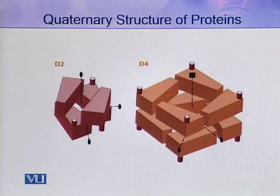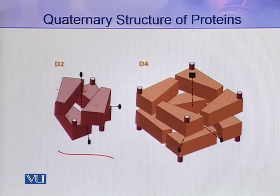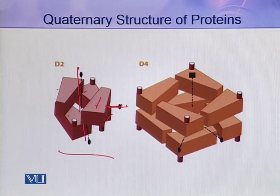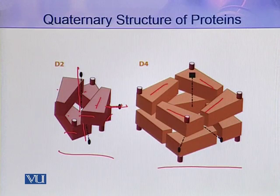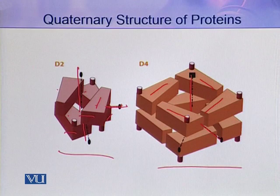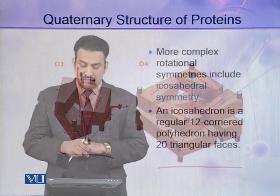As you can see in this diagram, four protomers are present but they have more than one rotational axis — one rotational axis is here and the other one is here, one for these two protomers and another for the other two protomers. Similarly, in D4 dihedral symmetry, the number of protomers increases but again there are at least two rotational axes present in the molecule.